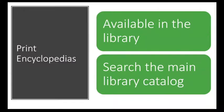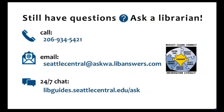Print encyclopedias are also available in the Seattle Central College Library, located behind the research help desk. You can find more information about them through the main library catalog. Now you know what reference materials are, why you would use them, and how to find them online. To learn more or ask questions, contact a librarian in person, by email, by online chat, or by phone.